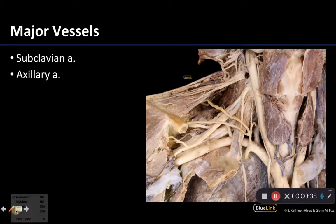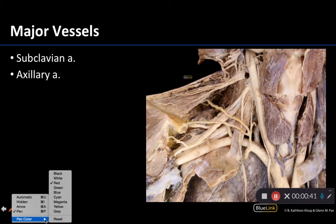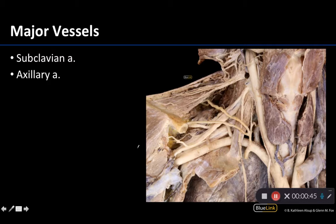As you hopefully recall from some of the active learning sessions, there is going to be one main artery that really supplies the upper limb and it basically just changes its name in certain areas. We're looking here at the root of the neck — we know this because here's your thyroid gland, you can see the common carotid coming off the thyrocervical trunk, and then this right here is the subclavian artery.